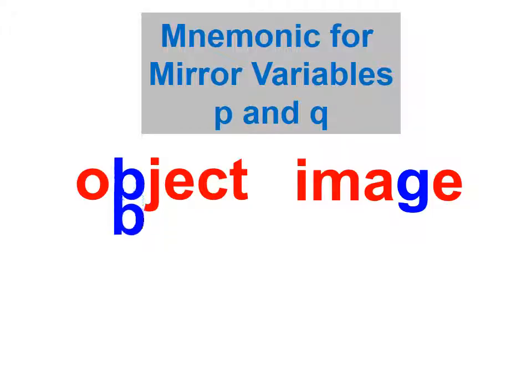In a previous lesson, I also went through the mnemonic for remembering that the object distance is symbolized by a lower case p, and the image distance is symbolized by a lower case q. If you take the b in object and you flip it upside down, it turns into a p. If you take the g in image and you turn the little crook the other way, it turns into a q. That's one way to remember that the object distance in these lessons will always be symbolized by a p, and the image distance symbolized by a q.